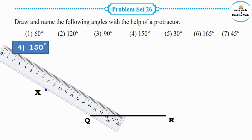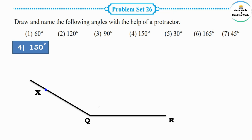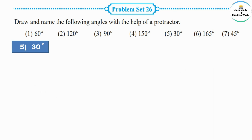Lift the protractor and draw a line with the help of a ruler from point Q through the marking point X of angle 150 degrees. The angle is ready. The angle name is XQR. The vertex is Q, and the arms are QX and QR.